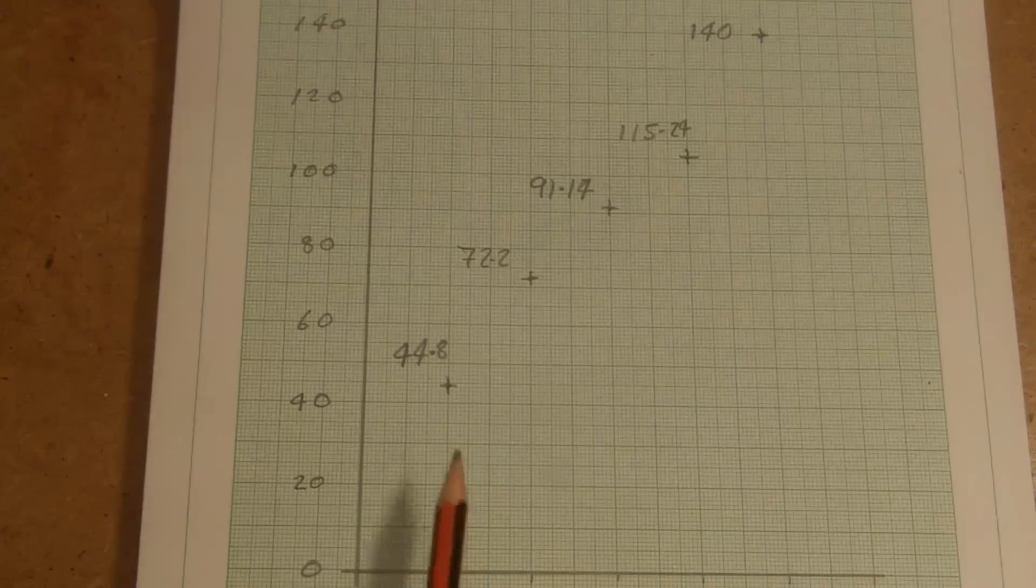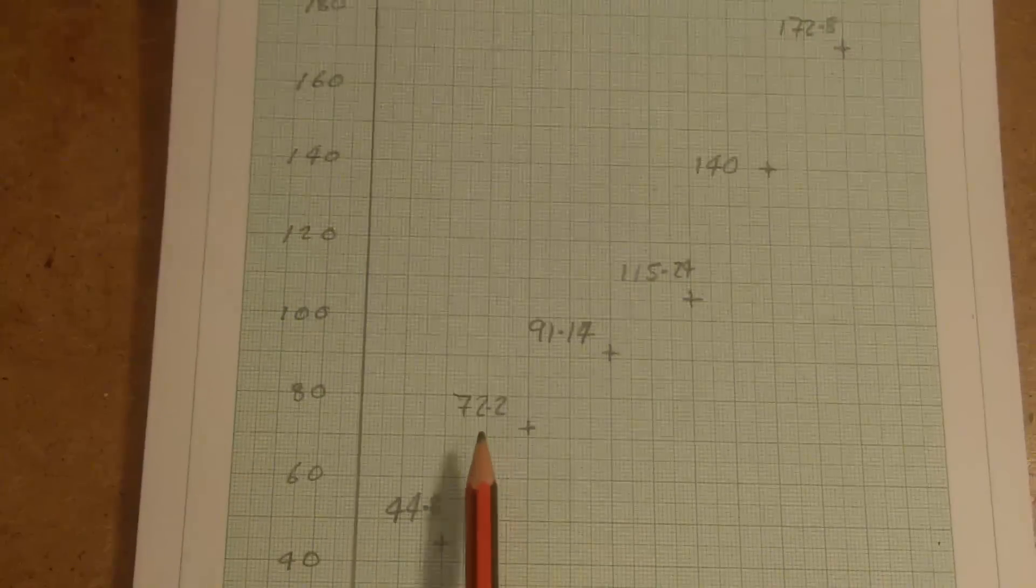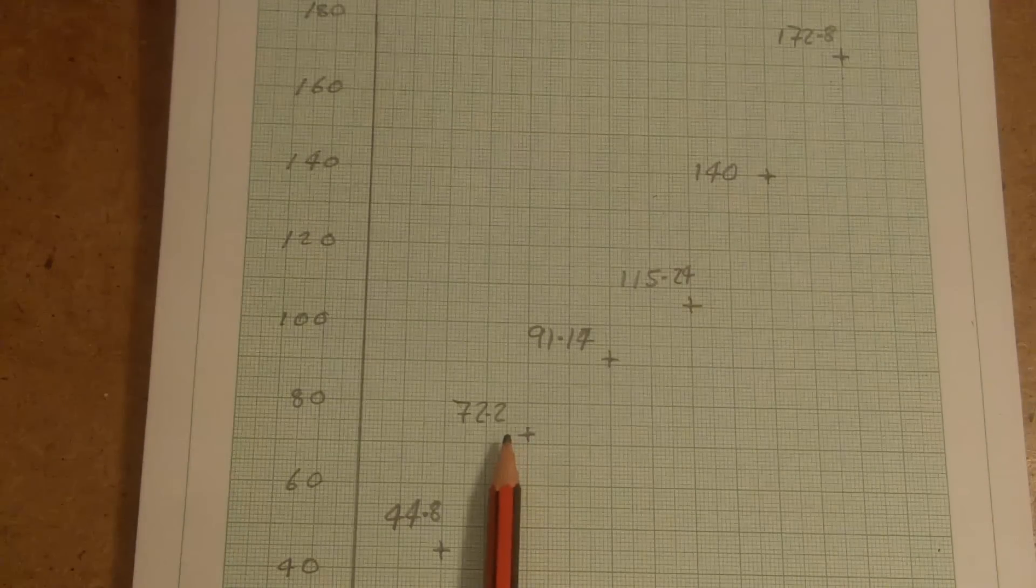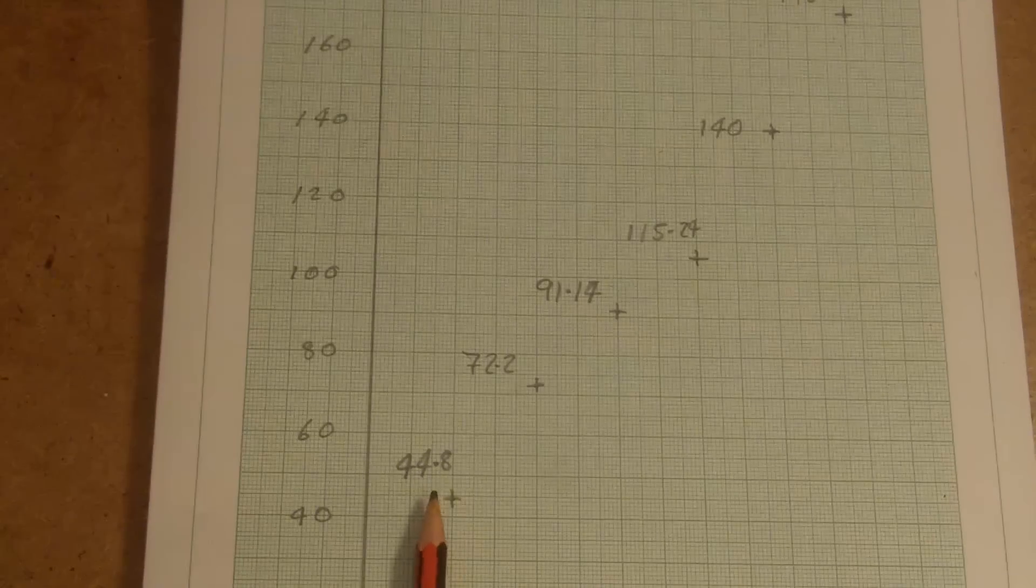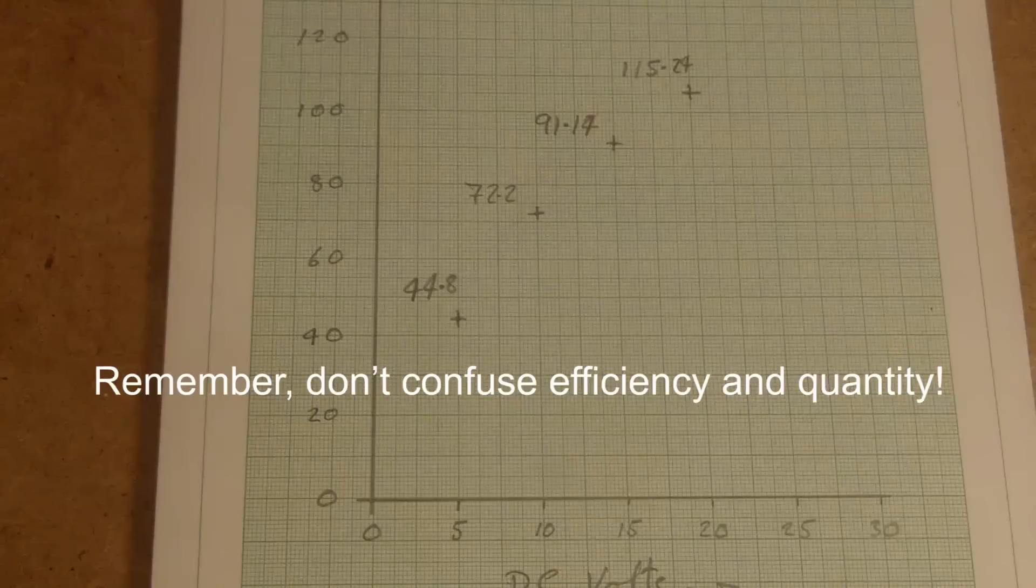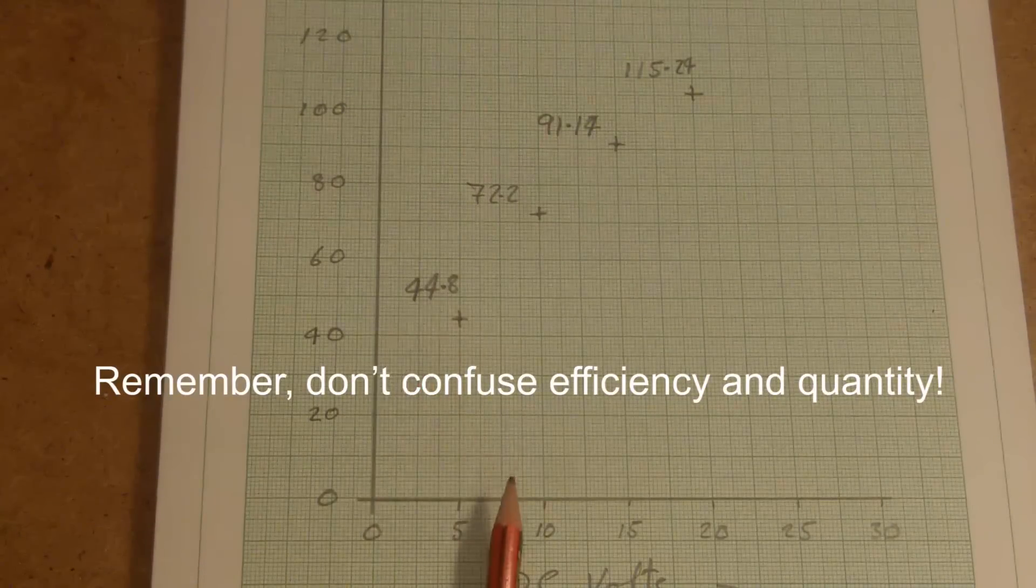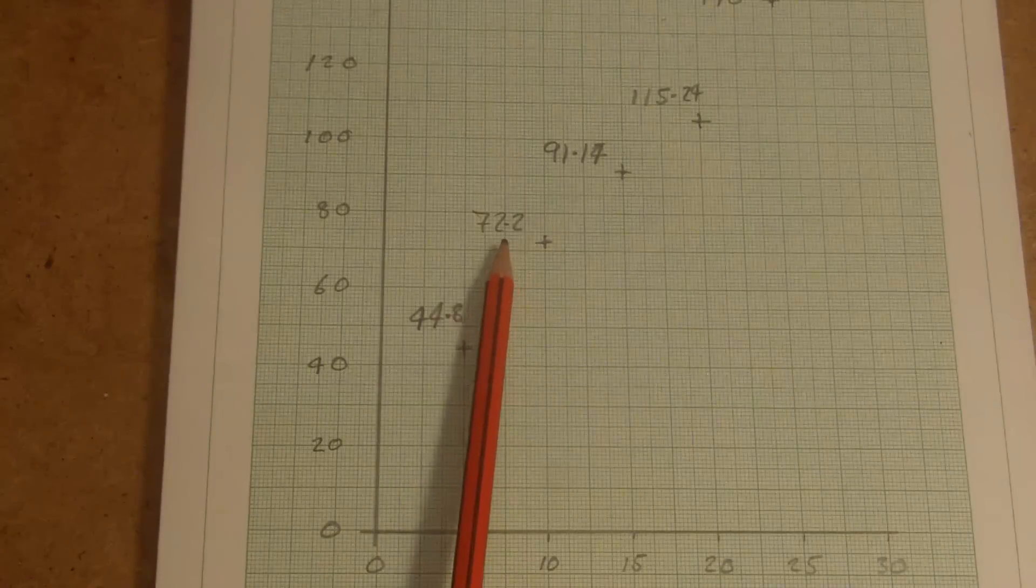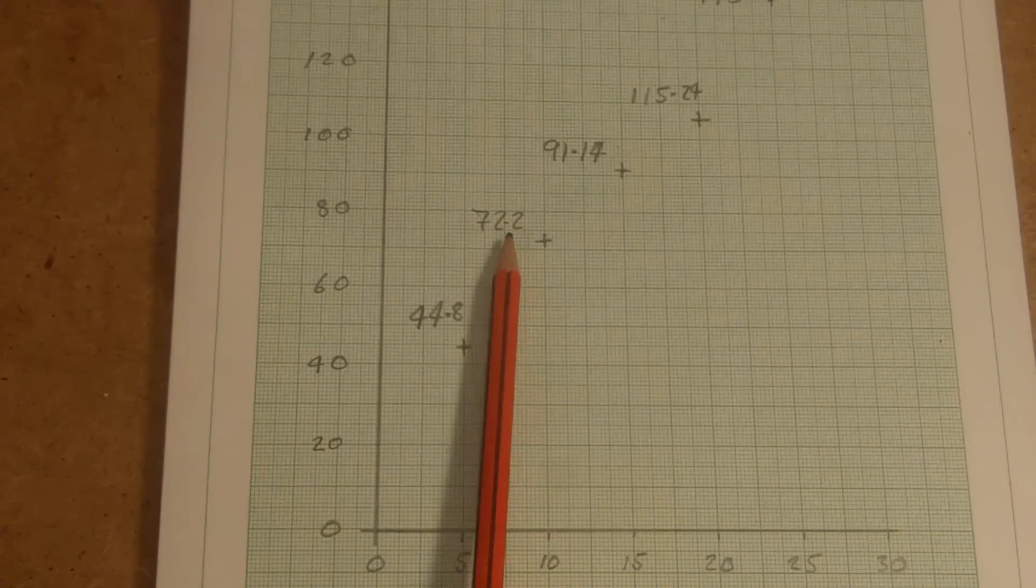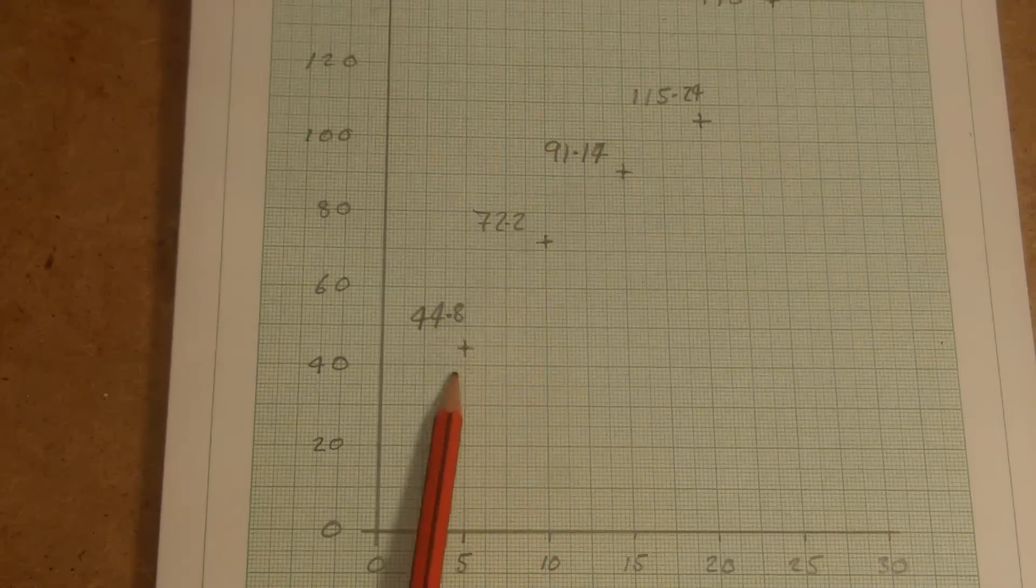Okay, so at 5 volts, it took 44.8 watts seconds to produce one milliliter. At 10 volts, that increased to 72.2 watts seconds per milliliter. So, what that's telling us straight away is that it takes more energy to produce the same amount of gas when we're working at a higher voltage. So, for clarity, at 5 volts, it took 44.8 watts seconds. But, I went to a higher voltage, and it actually took more watts seconds. So, more power, that's amps times volts times seconds to give me watts seconds. It took more power to produce the same amount of gas, the same volume of gas, in both cases.